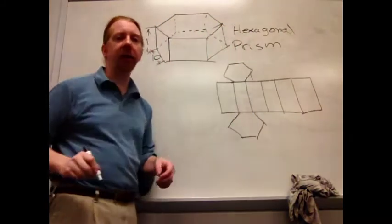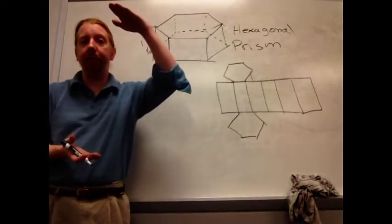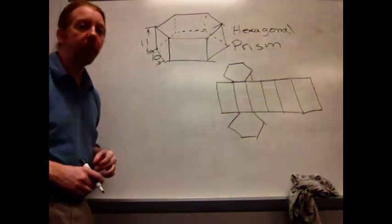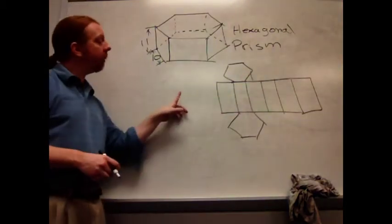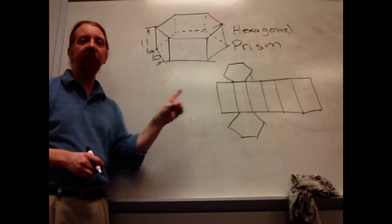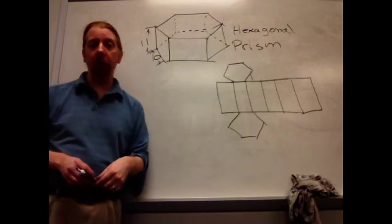Then, another hexagon there. So there's the top and the bottom, and this lateral area wrapping around. Now, I can also look at that as six individual rectangles. That strategy still works.